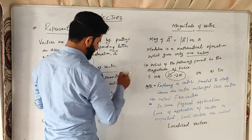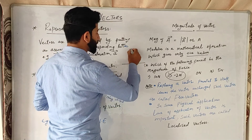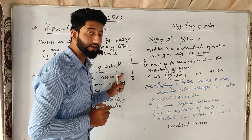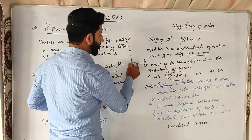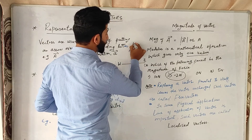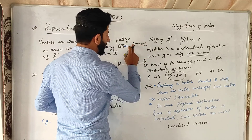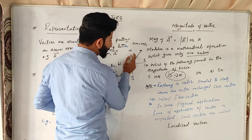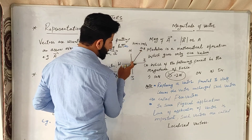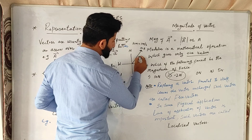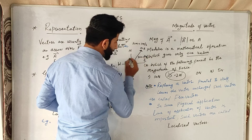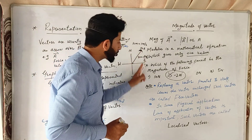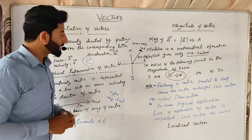Agar mein yahan pe pehle north, south, east, west ki line dalunga — this will be the direction of north, south, east and west. Mujhe 5 meter per second velocity ko represent karna hai north east direction mein. Toh mein kya karunga — pehle ek scale choose karunga: 1 cm will be equal to 1 meter per second. Thaik hai, iska matlab mujhe 5 cm ki line draw karni hai along the direction of north east. Is vector ki length jo hai, that is 5 cm, that represents the 5 meter per second velocity, and the arrow represents the direction along north east. Yeh direction ho gaya, yeh magnitude ho gaya — aise vectors ko represent karte hain.